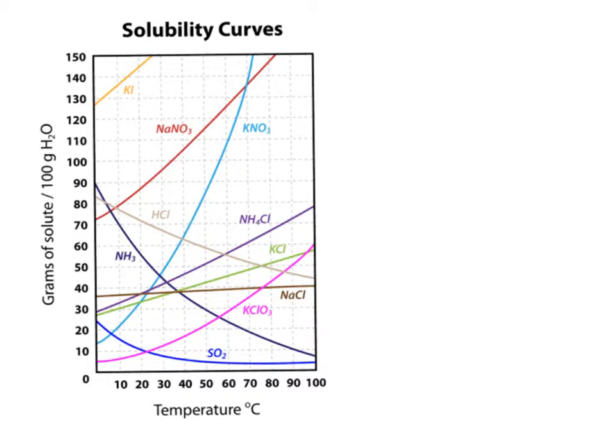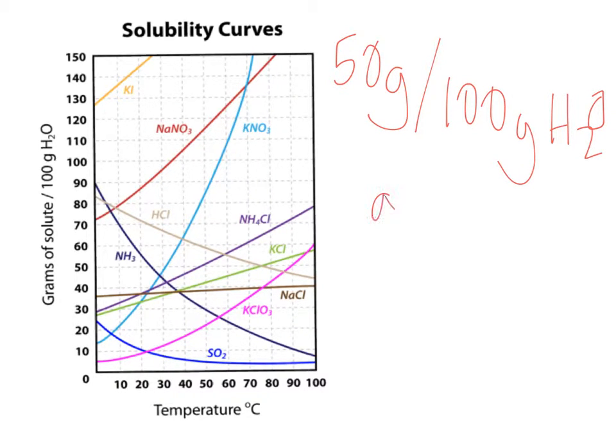And so one thing I could ask you is if I had, let's say I had 50 grams per 100 grams of H2O. And it was at, let's say it was at, 20 degrees Celsius. So what I would do is I'd look on my graph and I'd say, okay,